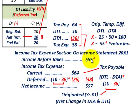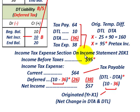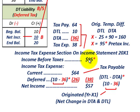Subtracting the $38,000 tax expense from income before taxes of $95,000, our net income for the year is $57,000. That's how we'd report the income tax section on the income statement for year X1, reconciling income before taxes with our taxable income.